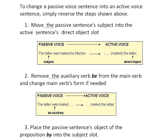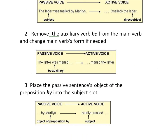First, move the passive sentence's subject into the active sentence's direct object position. In 'The letter was mailed by Marilyn,' 'the letter' was the subject — it becomes the object. Second, remove the auxiliary verb 'be' from the main verb and change the main verb form if needed — 'was mailed' becomes 'mailed.' Third, place the passive sentence's object of the preposition 'by' — 'Marilyn' — into the subject slot, giving us 'Marilyn mailed the letter.' These are the main steps by which you can convert sentences from active to passive or vice versa.